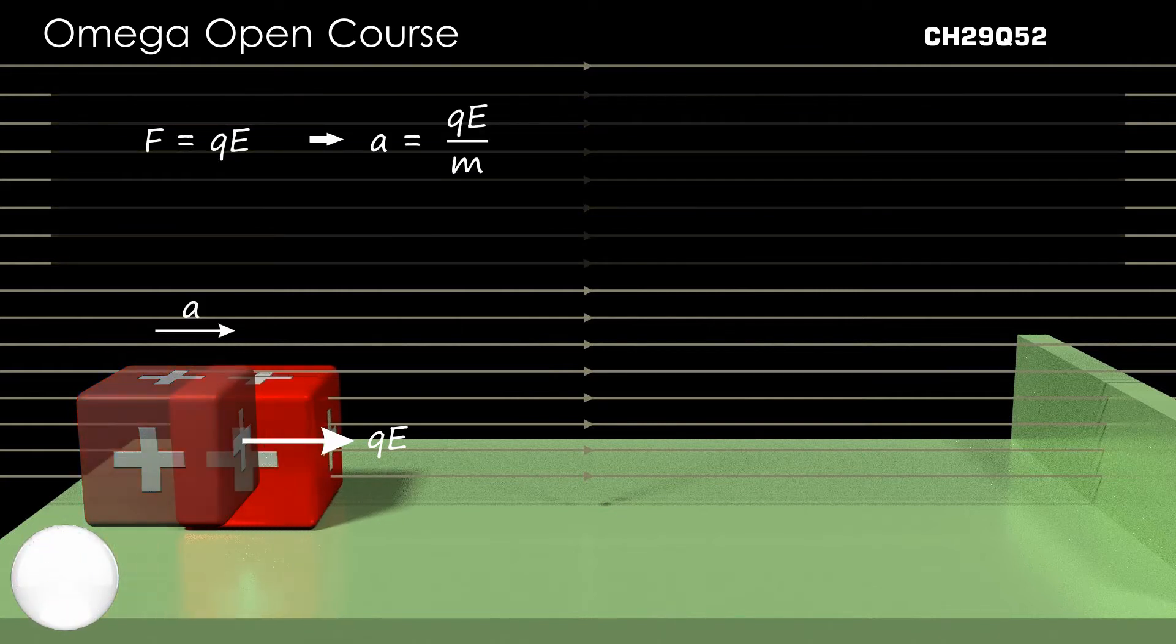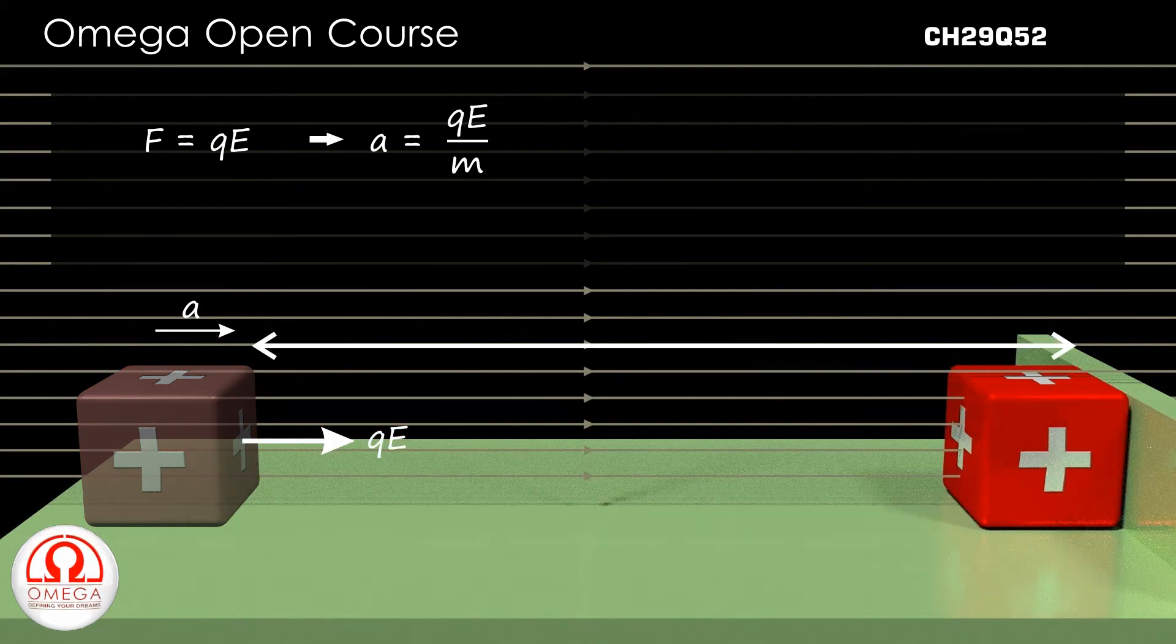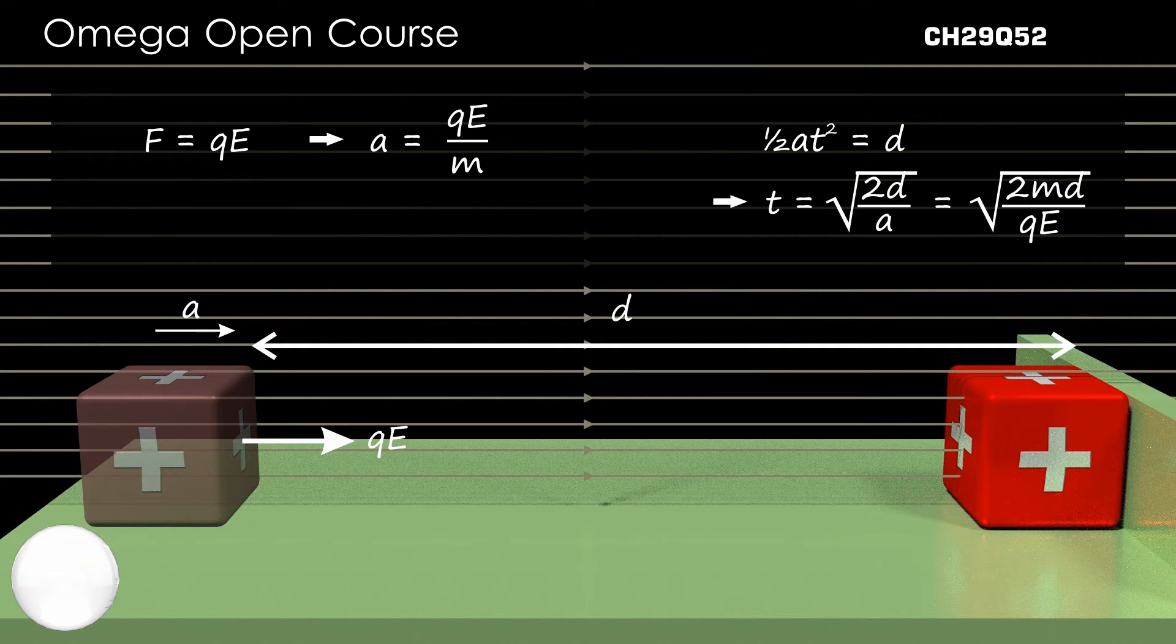If t be the time the block takes to travel from its initial position to the wall, then half AT square must be equal to d. This implies t is equal to root under 2d by A. Putting the value of A, we get t is equal to root under 2md by QE.